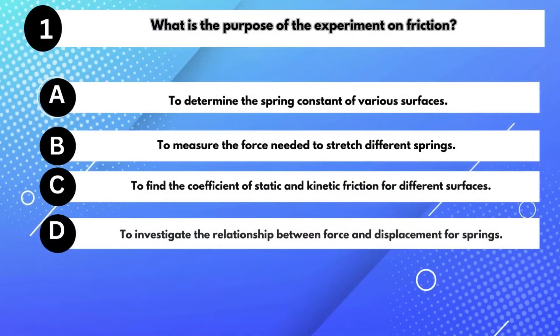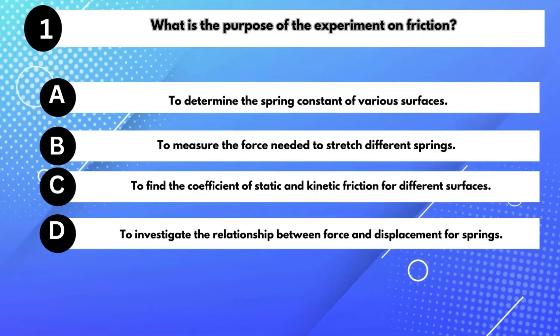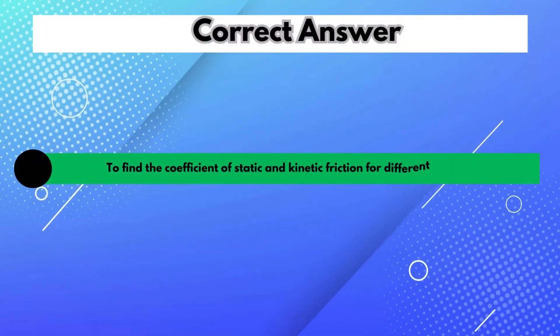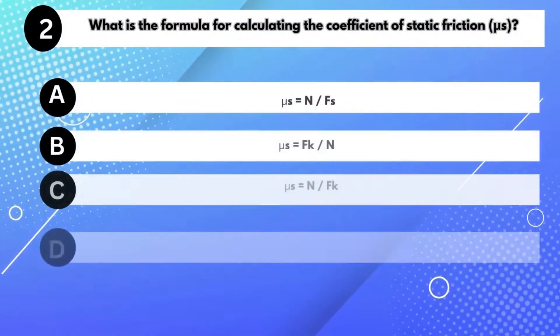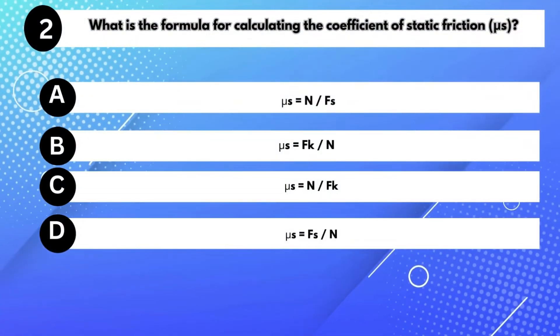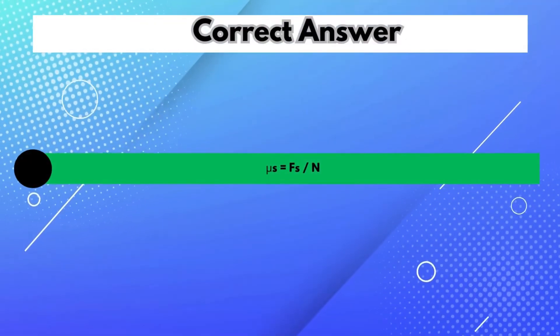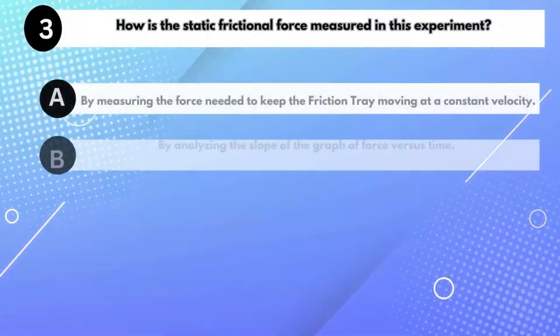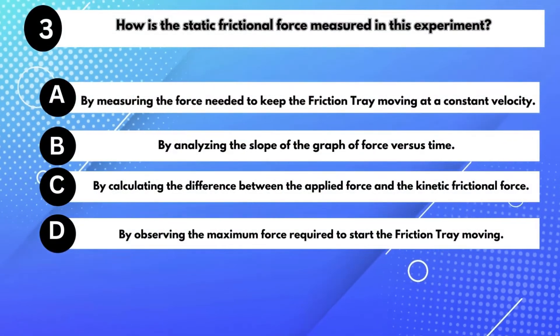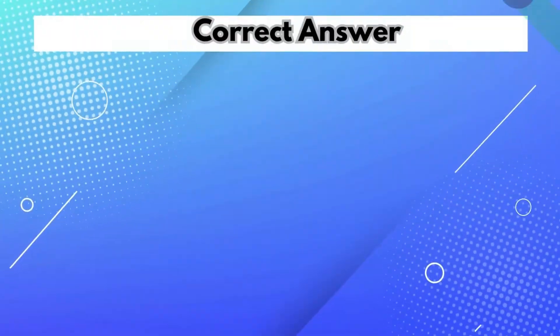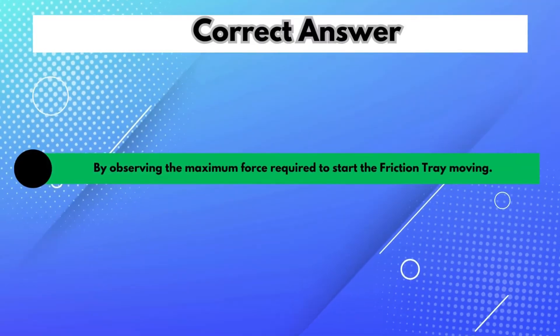What is the purpose of the experiment on friction? Answer C: To find the coefficient of static and kinetic friction for different surfaces. What is the formula for calculating the coefficient of static friction, μs? Answer D: μs equals Fs divided by N. How is the static frictional force measured in this experiment? Answer D: By observing the maximum force required to start the friction tray moving.